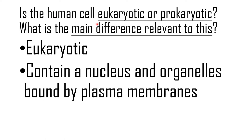Is the human cell eukaryotic or prokaryotic? It is eukaryotic. The human cell is a eukaryotic cell, and eukaryotic cells contain a nucleus and organelles that are bound by plasma membranes — and it is this nucleus which contains the genetic material of the cell. In prokaryotic cells, there is no nucleus or organelles, so the genetic material or DNA just lies within the cytoplasm of the cell. In eukaryotic cells, the genetic material is present within the nucleus.